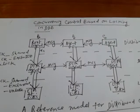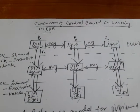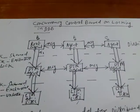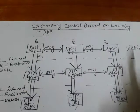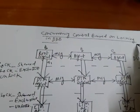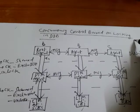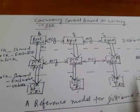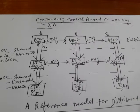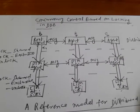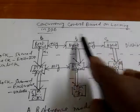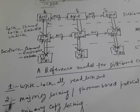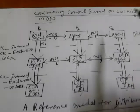In this video we are going to learn concurrency control based on locking in distributed databases — how we can ensure concurrency using the locking protocol. I will take one simple example first to explain the figure, and then cover the different types of concepts you can follow for locking.